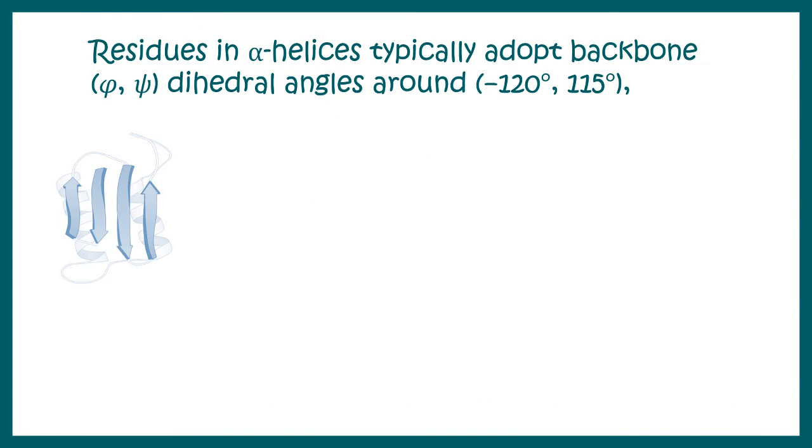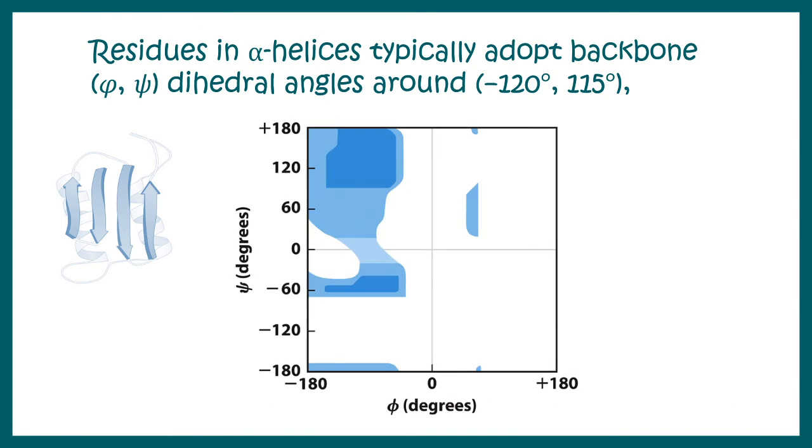If we look at the beta pleated sheet in a Ramachandran plot, we would see the phi and psi angles would be roughly minus 120 degrees and plus 115 degrees. Both parallel and anti-parallel sheets fall into this region.